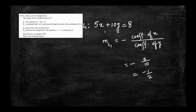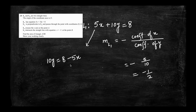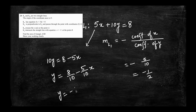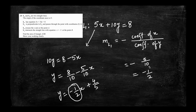That was one method of finding the gradient. Another commonly used method is to rearrange the equation into the form y equals mx plus c. Doing that gives 10y equals 8 minus 5x, then dividing both sides by 10: y equals negative 1 over 2 times x plus 4 over 5. Comparing with y equals mx plus c, the gradient is negative 1 over 2. Both methods give the same result.